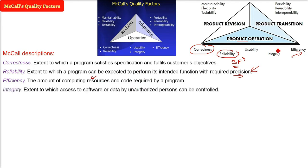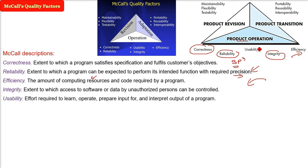Integrity is about controlling access for unauthorized users — how we control access to the software and data. Usability is the effort a novice or new person must put in to learn and operate the software, including interpreting input and output, because input and output are also very important.